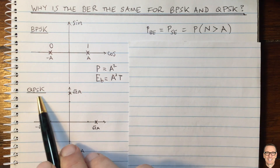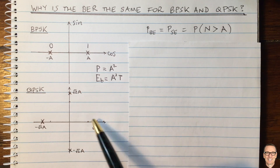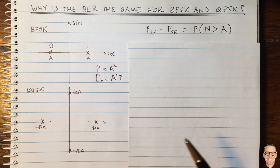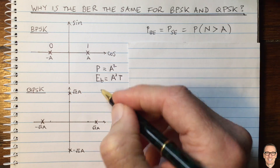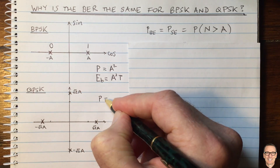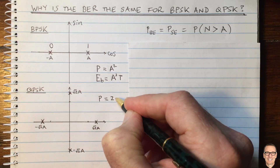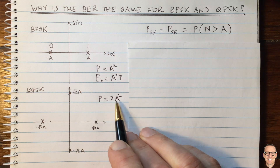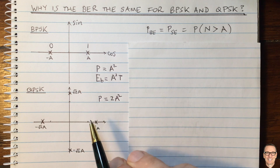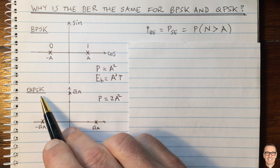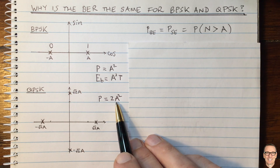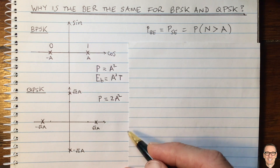Now let's think about QPSK. In this case we have four constellation points. The way I've drawn them here is such that the power equals 2 times a squared, because when we take the square of these values — square root of 2a — we get 2 times a squared. In this case we are sending two bits per symbol, so I've drawn it for the case where there is twice the power compared to BPSK.